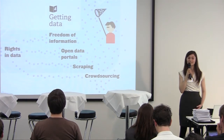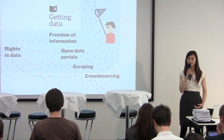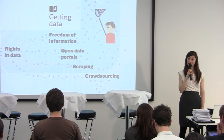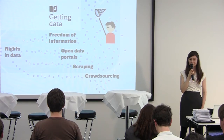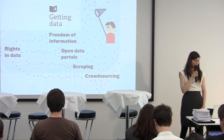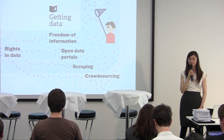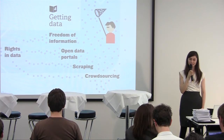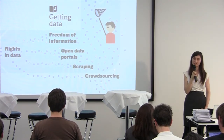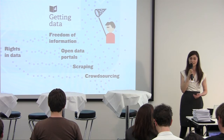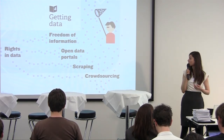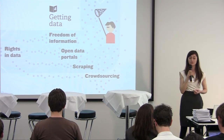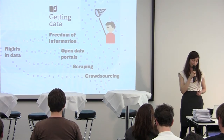Once you've got a sense of what data journalism is and what people have done in this field, the second part of the book focuses on how to get started. The first step is getting data. In this chapter you'll find out how to get data by using freedom of information laws, getting data from the web by scraping, using open data portals, and also how to crowdsource data collection.